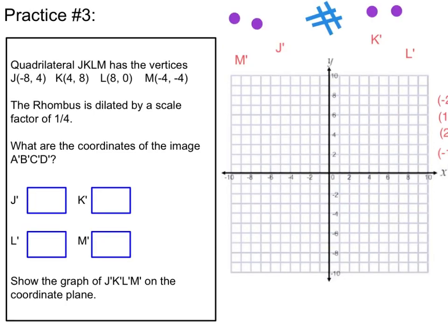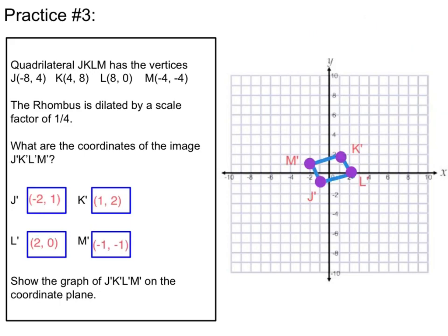Finally, we come to practice number three. Quadrilateral JKLM has the vertices listed below, and the shape is dilated by a scale factor of one fourth. List the coordinates and draw it on the coordinate plane. Go ahead and pause the video, try that on your own, then press play again to see if you are right. You should have been multiplying every point by one fourth. If you weren't a fan of fractions, you could divide 1 by 4 in your calculator to get 0.25 and multiply that way. This brings us to the end of our video — if you liked it, give us a thumbs up, and if you loved it, subscribe. We'll see you next time.